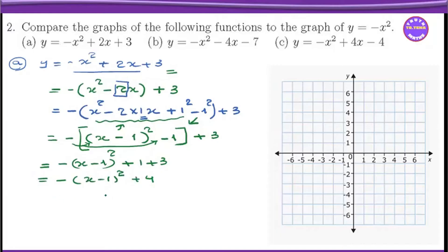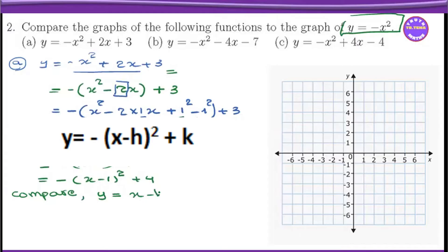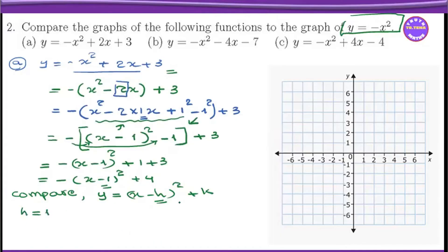How do we do this? Now we have to look at the vertex point — we have to compare. Compare is a very nice point. We have to look at the vertex point. The vertex form is y equals a times x minus h, the whole square, plus k. So h equals 1, and k equals 4.